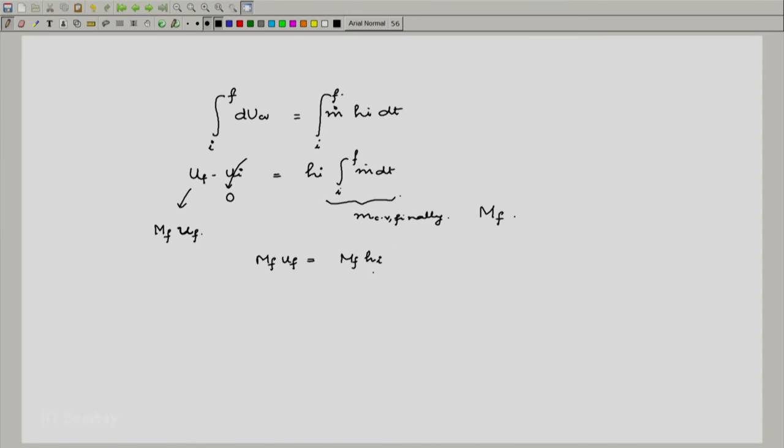This h_i, let us replace it by h naught since the outside conditions were designated as p naught and t naught. We can remove the mf, that is the same. So u final in the bottle is h naught. So what do we do now? We just write this as u naught plus p naught v naught.